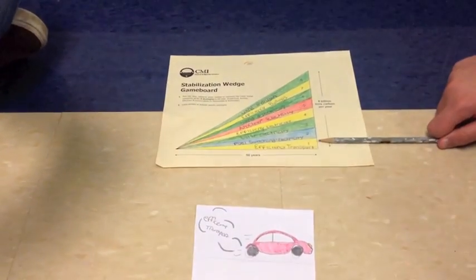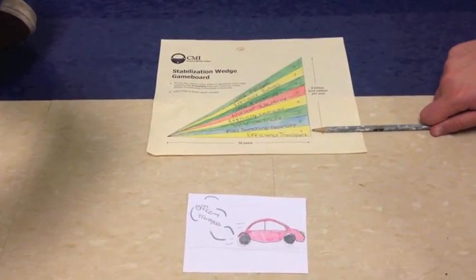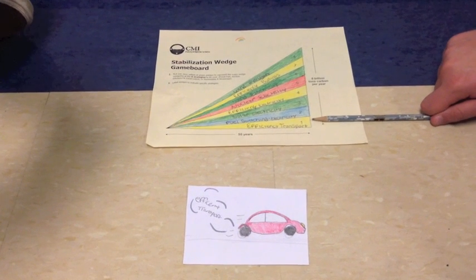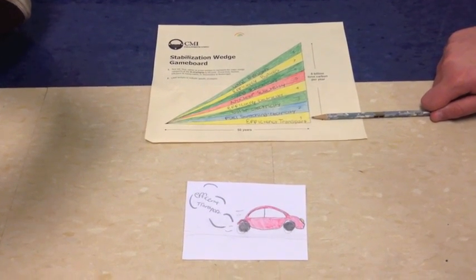Our first wedge is efficiency transport. This wedge would help out with transportation and is inexpensive with one dollar sign.